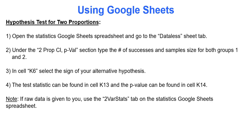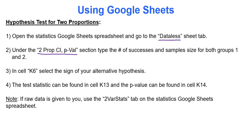To conduct a hypothesis test for two proportions we will use Google Sheets. We'll go to the data list tab and go to the region that says 'two proportion confidence interval p-value,' and we'll type in summary statistics for the two samples.